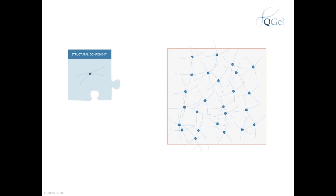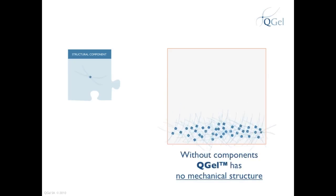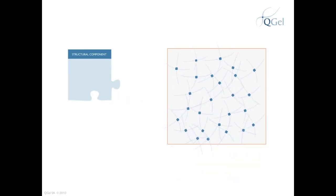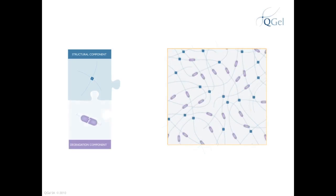With only the structural component, the matrix looks like this. Actually, this is incorrect — without the degradation component, Q-Gel cannot form any structure and would just fall apart. Let's see what happens to the structural component when we add the degradation component. A cross-linker is needed here. Reactions occur that give Q-Gel mechanical structure. Q-Gel products that are degradable and not cell adhesive would look similar to this structure.